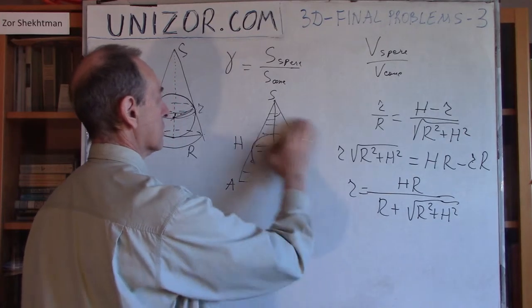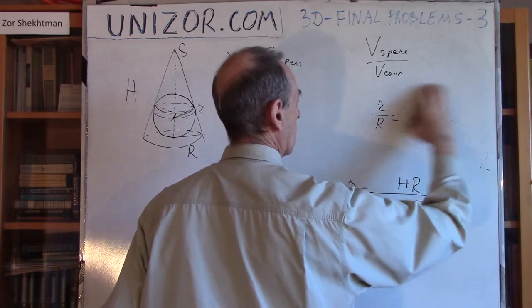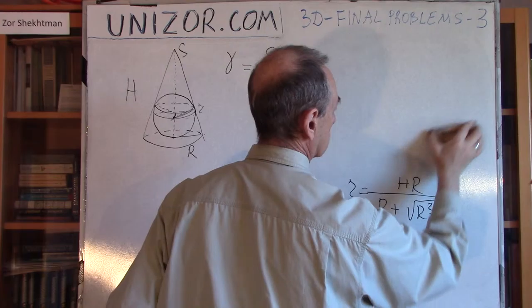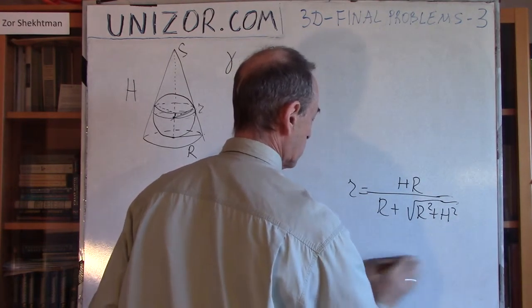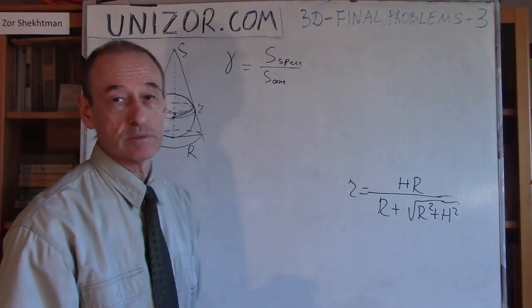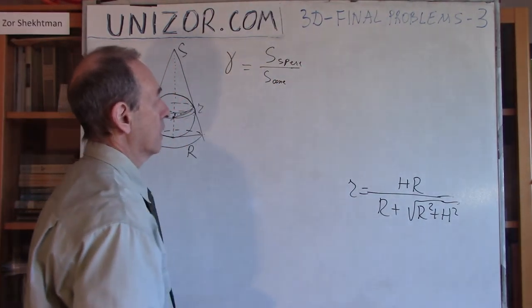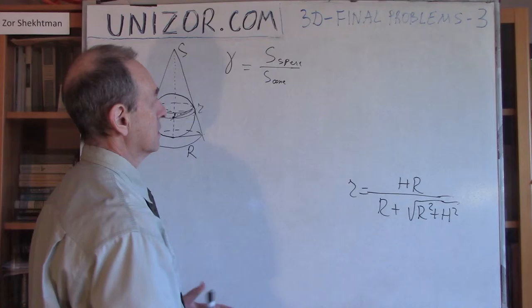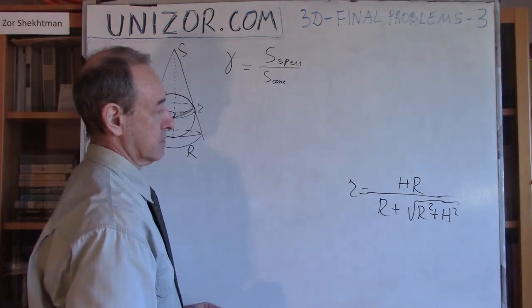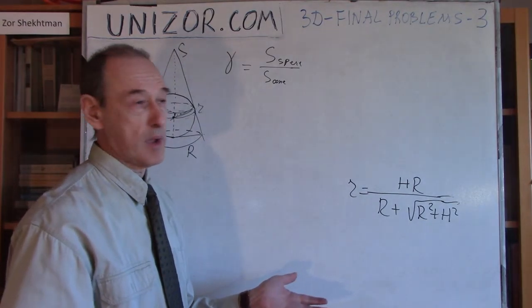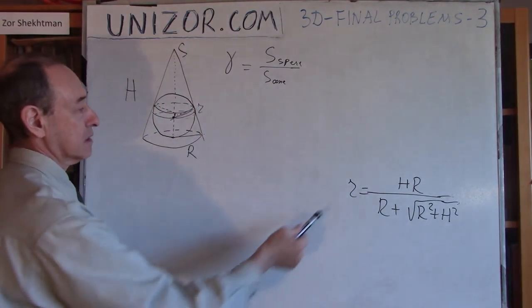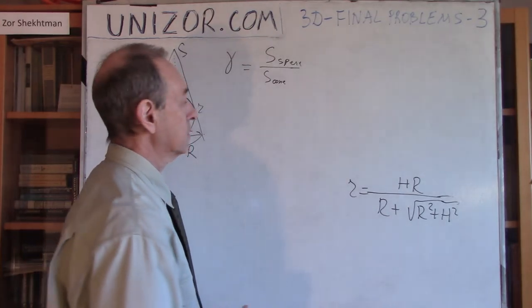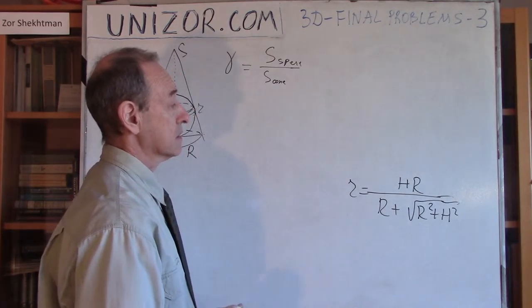We've got that. Now I just have to go through calculations, which is kind of boring but nevertheless needs to be done. Let's compare the surface area of the sphere with the surface area of a cone, and then the volume, because I have all the parameters. H and R define everything. Lowercase r I have expressed in terms of H and R, and H and R are completely unrelated to each other. It can be anything.